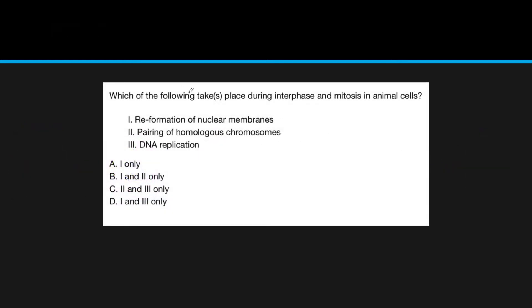Practice question: which of the following takes place during interphase and mitosis of animal cells? Re-formation of nuclear membranes occurs during telophase. Pairing of homologous chromosomes is done in meiosis, not mitosis. DNA replication happens during the S phase of interphase. So the answer is 1 and 3, which gives us D.